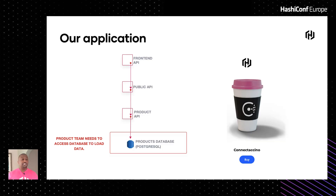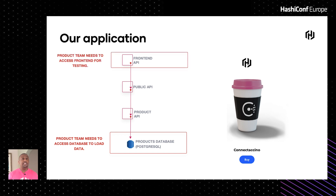In our application stack, the human element consists of two teams: a product development team and an operations team. The product team needs to access the database to load product data, and also needs access to the front-end API for testing. The operations team needs access to the core infrastructure as well as the database for break-glass scenarios — if something goes wrong, they need to be able to SSH into EKS nodes or connect to Postgres to troubleshoot and resolve issues.